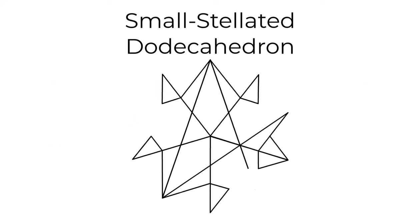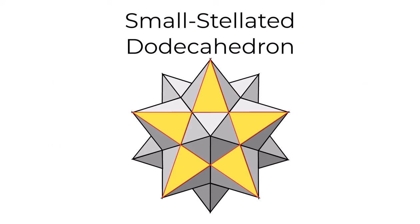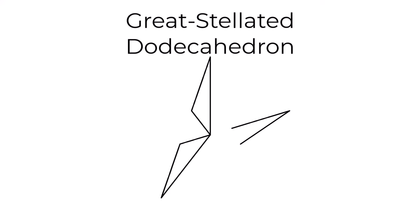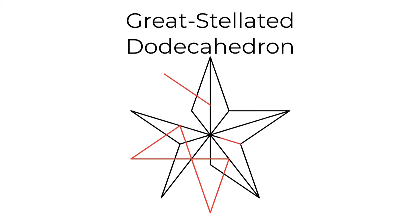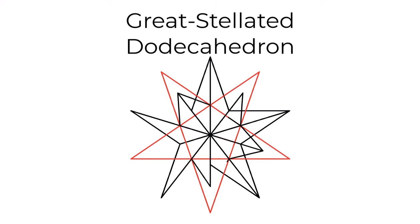Firstly, the small stellated dodecahedron, a creation of Kepler, displays a captivating array of pointed stars and dodecahedral symmetry. Next, the great stellated dodecahedron, another Kepler innovation, features an even more intricate design with intersecting planes that create a star-like pattern.